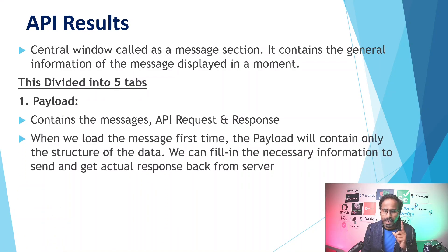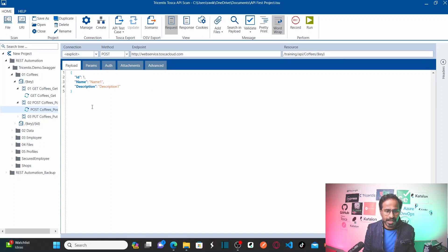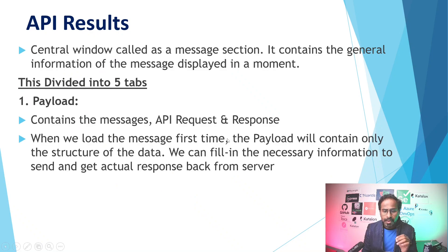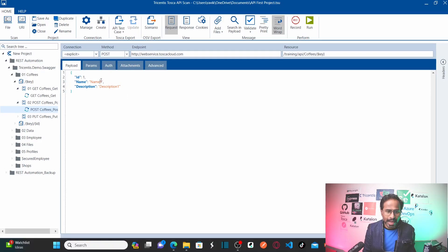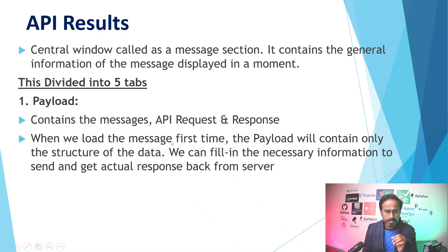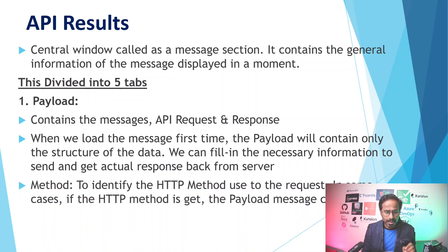When we load the message for the first time, the payload will contain only the structure of the data — it does not have any values in it. We can fill in the necessary information to send and get an actual response back from the server. I can fill in these default values with my actual values, send the request, and receive the responses.